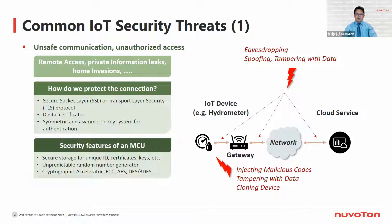Here is a simple figure to illustrate. An IoT device goes through a gateway network to cloud service. When data is transmitting in a channel, it will face eavesdropping, spoofing, tampering with data, and the local device may get injecting malicious codes from the network, even entire firmware leakage to get a cloning device.